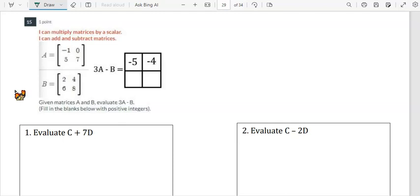So you give matrix A which is negative 1, 0, 5, and 7 and matrix B which is 2, 4, 6, and 8. We want to evaluate 3A minus B.